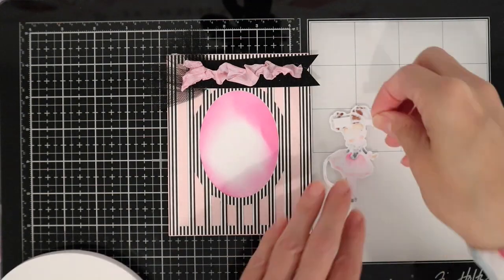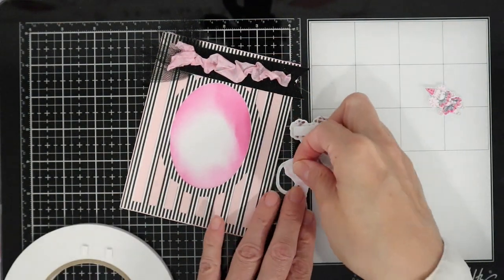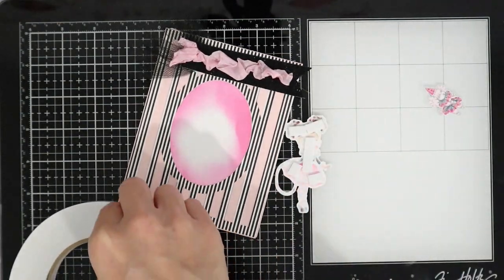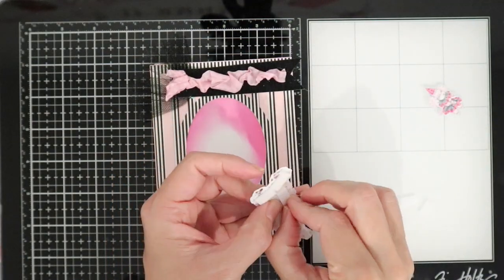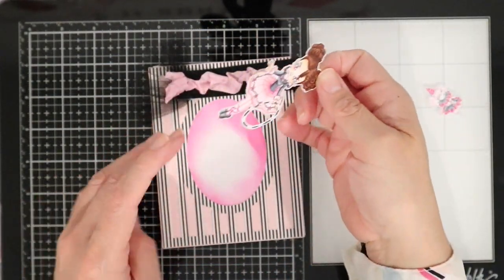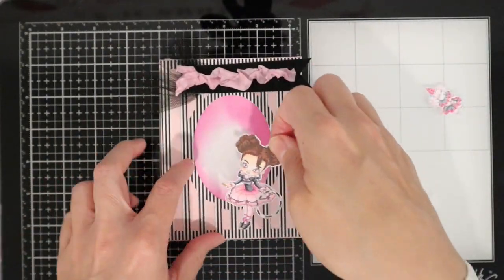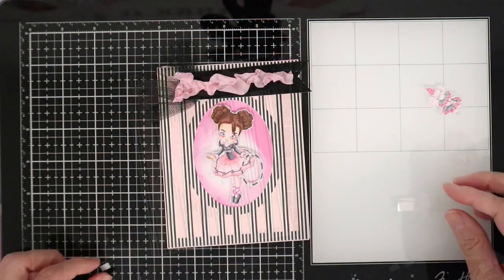Okay, now I'm gonna adhere my image down utilizing foam tape. What I want to do is make sure that my image is centered there in the oval opening.